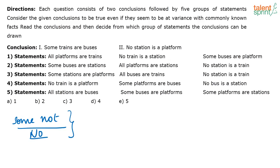So as I said, whenever there is a negative quantifier in the conclusion, in the statement also there has to be a negative quantifier. Now let us take this question itself. Look at the conclusion. What are the conclusions? Some trains are buses, and no station is platform. Here, 'no station is platform' is a negative statement. So to get this negative conclusion, in the statements there has to be a negative statement for sure. Look at option 5.